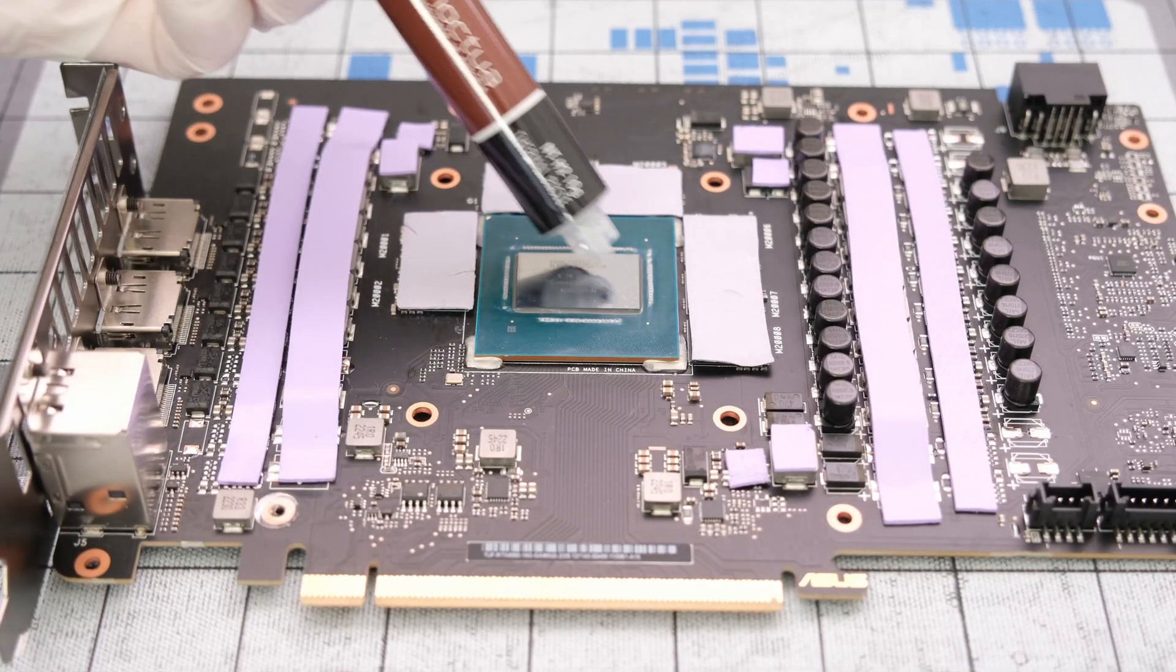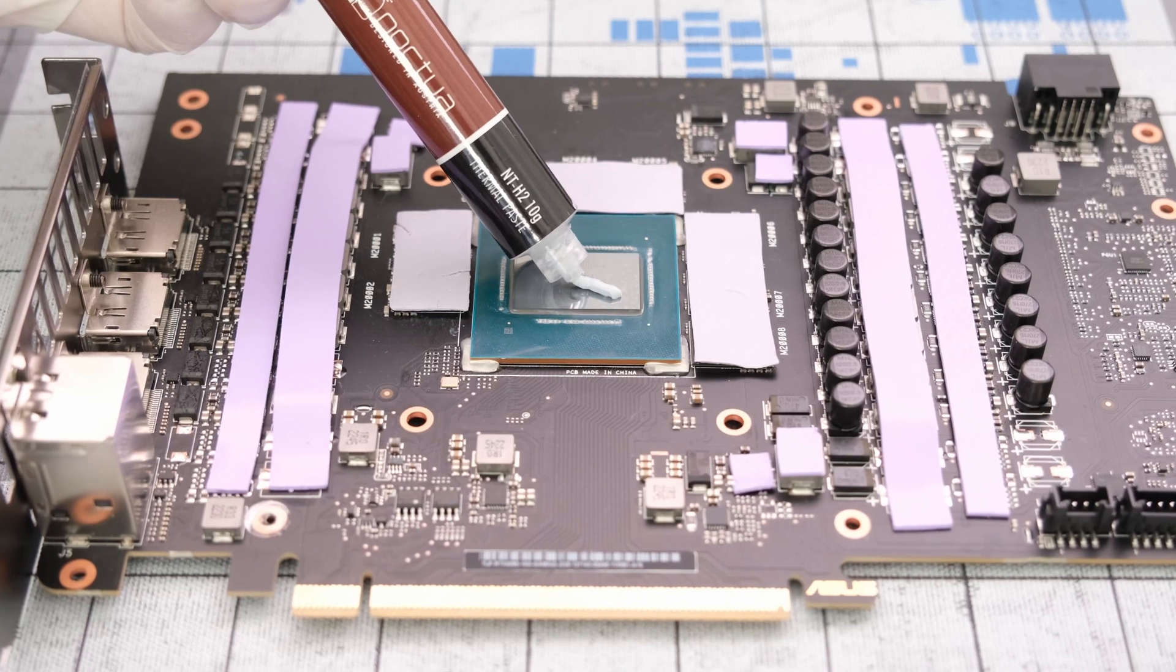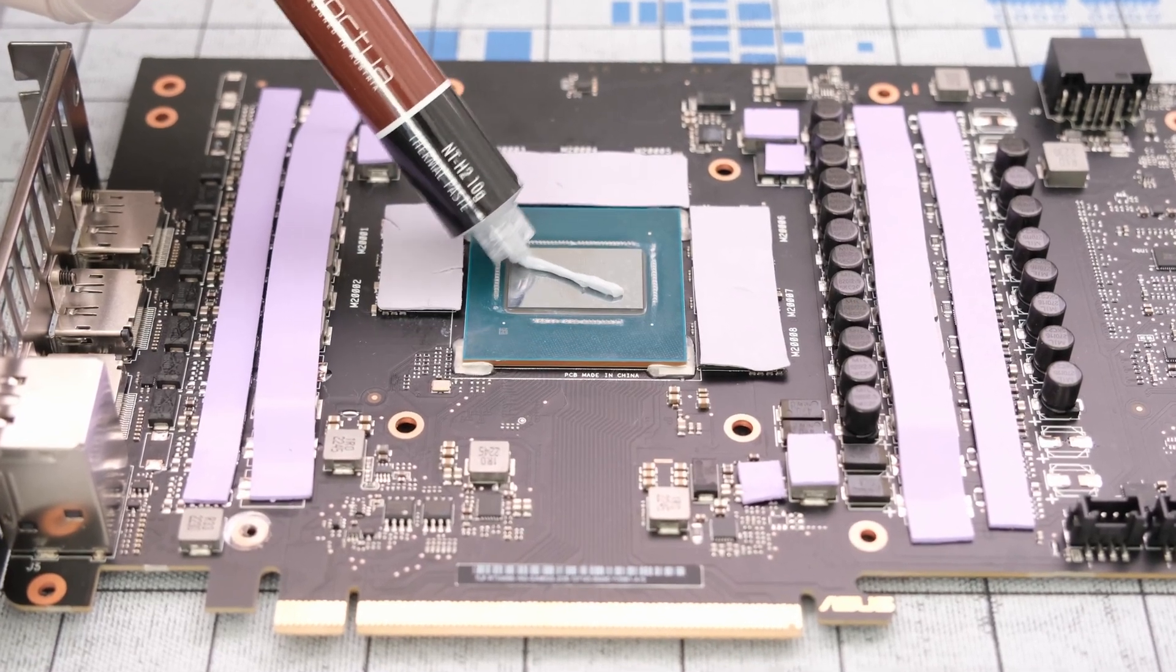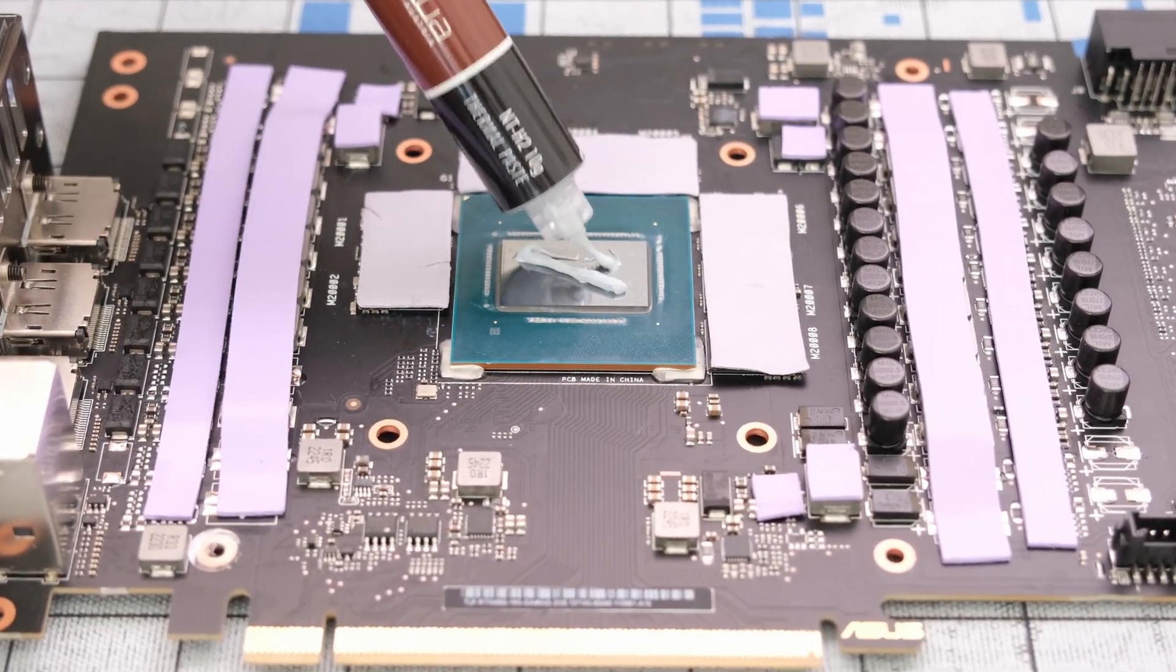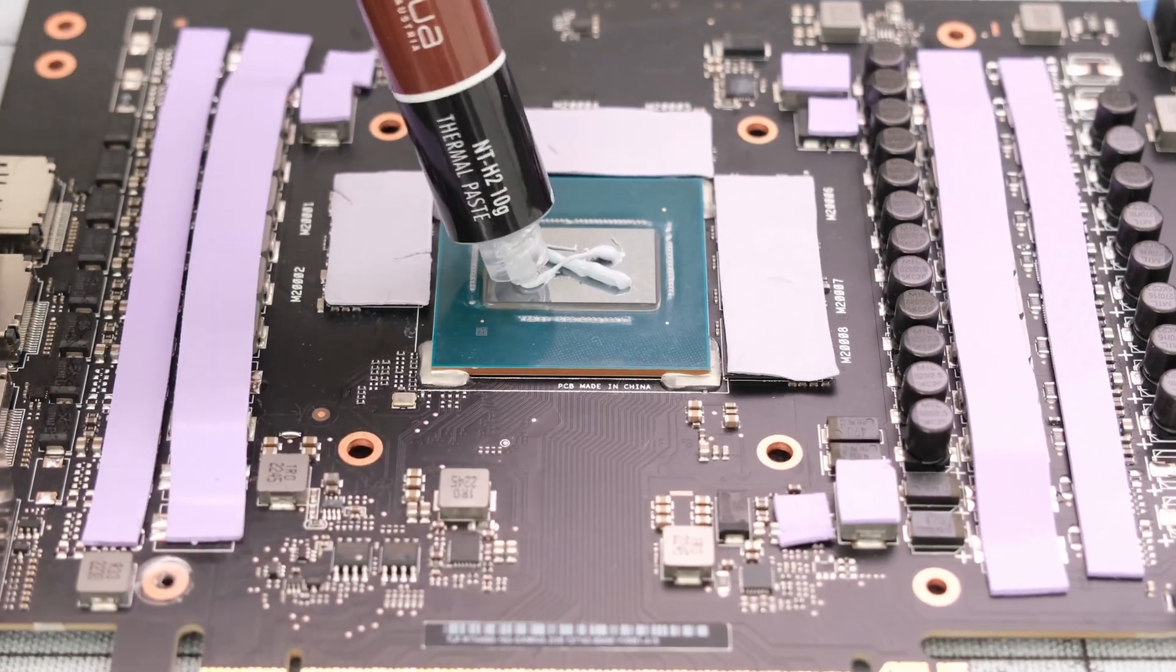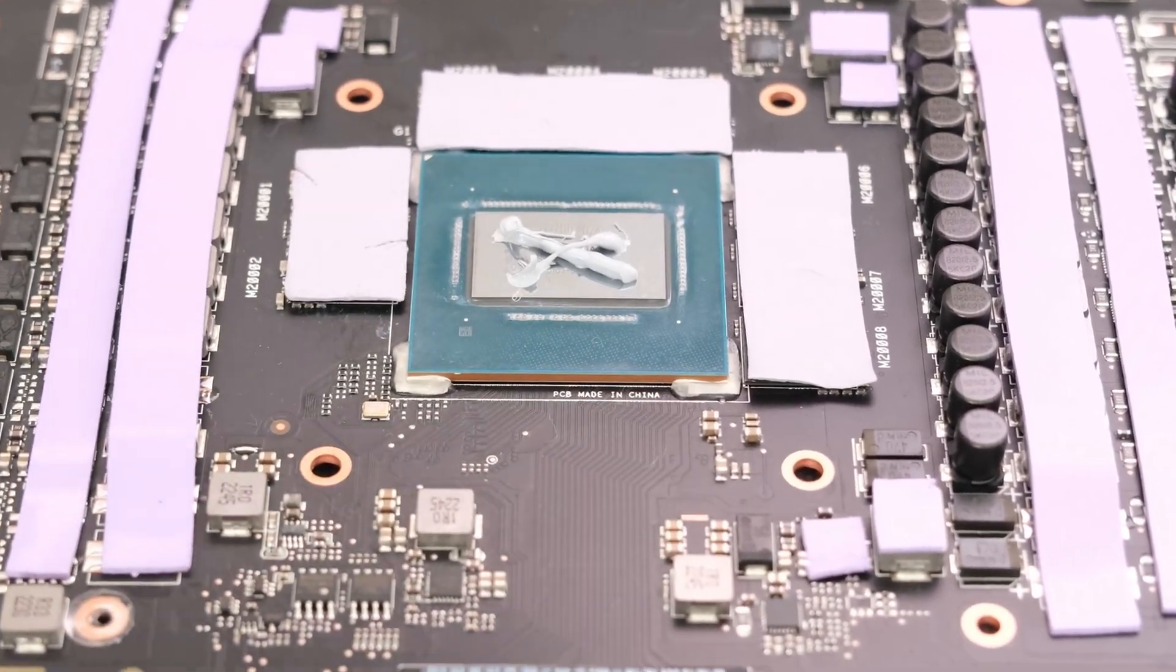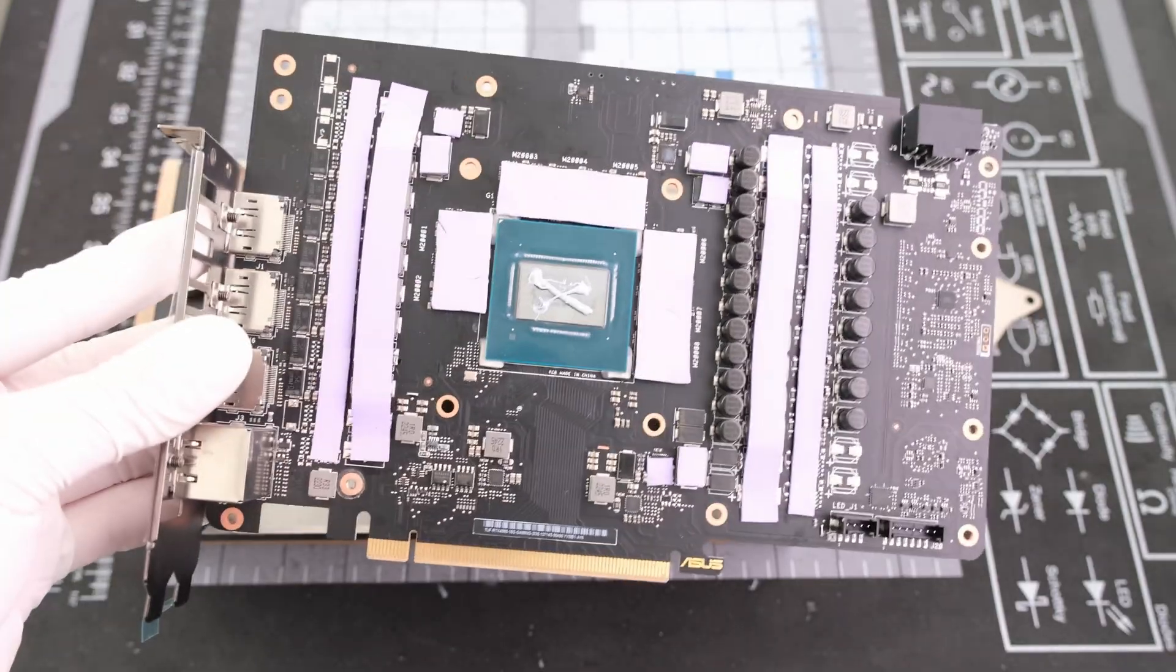Next, we can apply some Noctua NTH2 thermal paste. And then we can drop the PCB right on top.